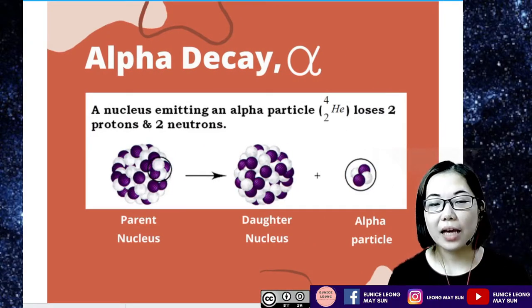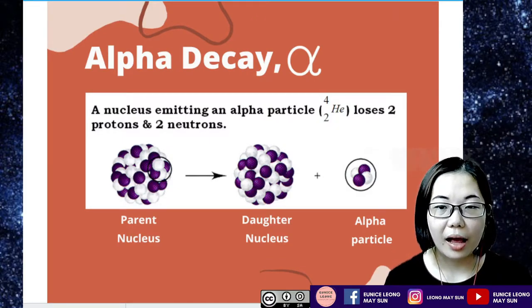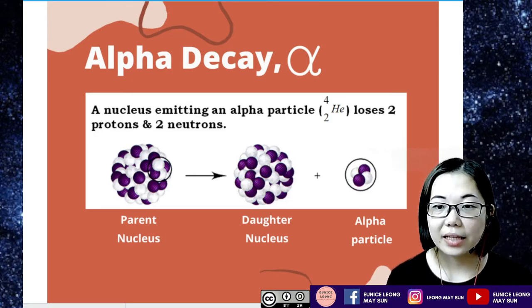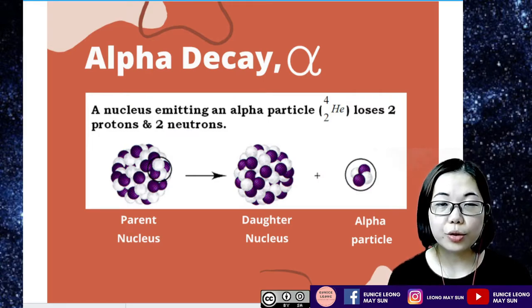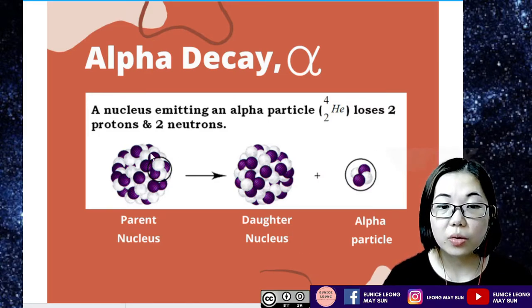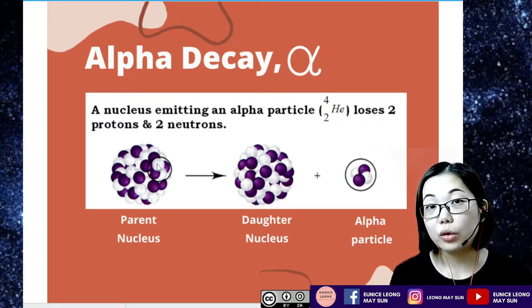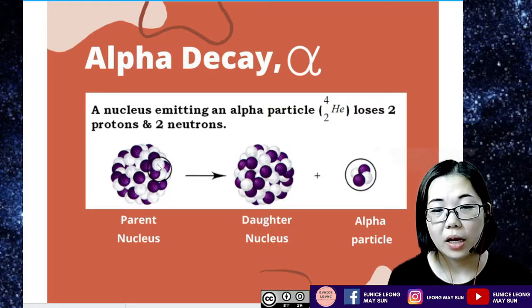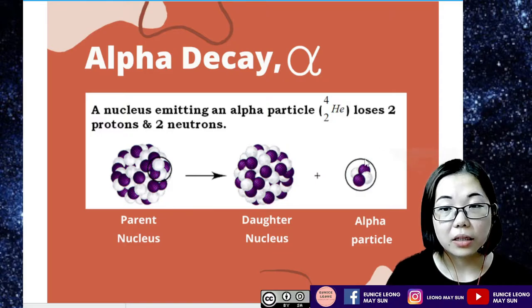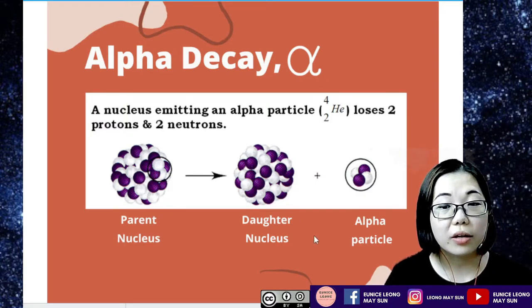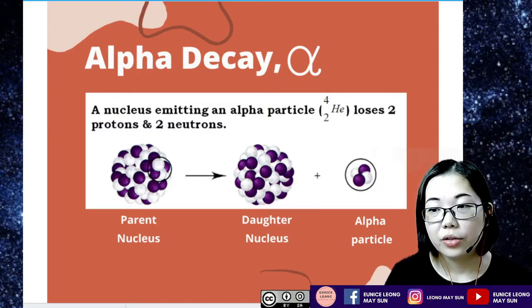So for alpha decay, or the symbol of alpha, it's a nucleus emitting out an alpha particle. We write it as helium-4-2 or alpha-4-2, whereby the nucleus will lose two protons and two neutrons. So the parent nucleus, in the nucleus, recalling back, nucleus is closely packed of neutrons and also protons. So from the nucleus, it emits out the alpha particle of two protons and two neutrons and the daughter nucleus will lose two protons and two neutrons.